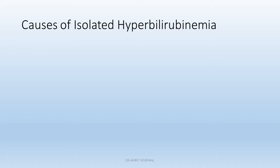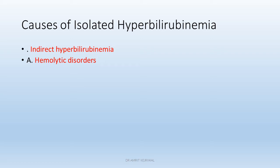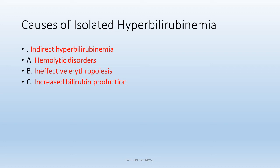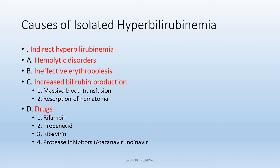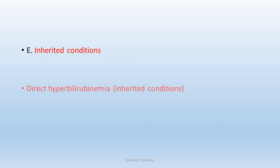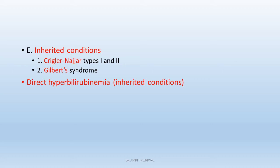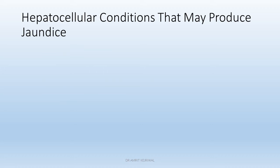Causes of isolated hyperbilirubinemia — where liver enzymes are normal — can be of two types: indirect and direct hyperbilirubinemia. Indirect hyperbilirubinemia can be due to hemolytic disorders, ineffective erythropoiesis, or increased bilirubin production, as seen in massive blood transfusion or reabsorption of hematoma. Various drugs cause isolated hyperbilirubinemia, commonly rifampicin, probenecid, glyburide, and protease inhibitors. Inherited conditions causing unconjugated hyperbilirubinemia include Crigler-Najjar type 1, type 2, and Gilbert's syndrome. Direct hyperbilirubinemia is caused by Dubin-Johnson syndrome and Rotor syndrome.